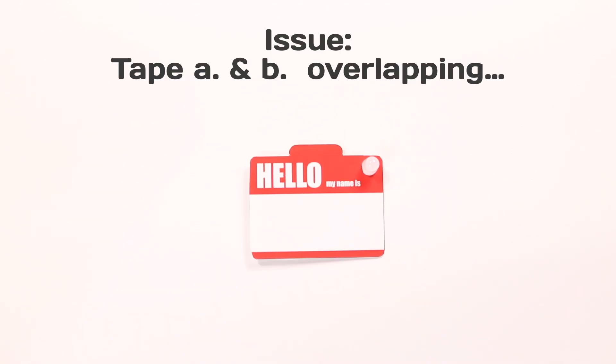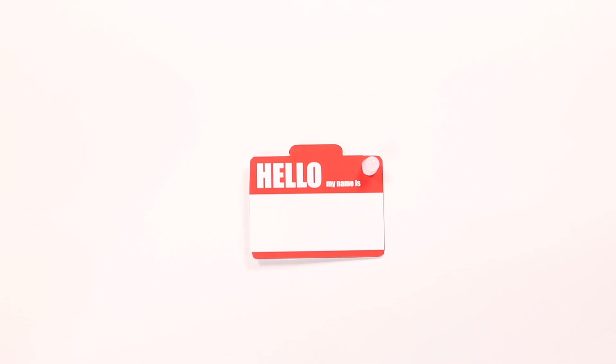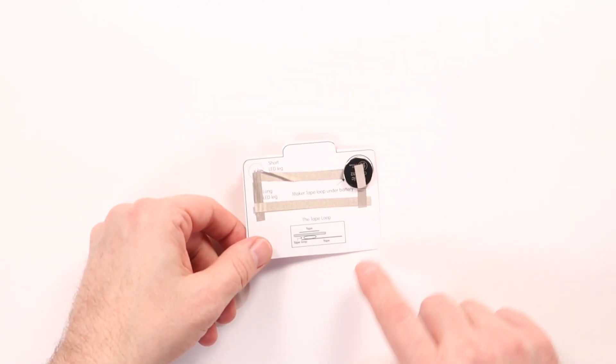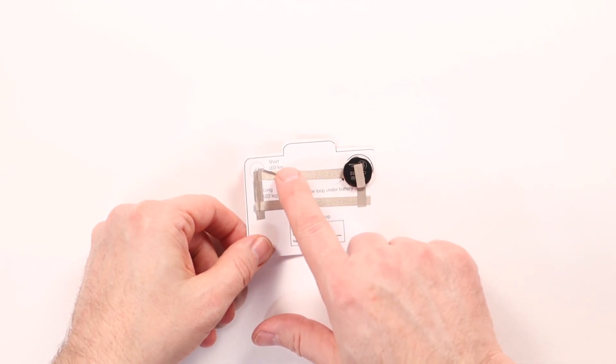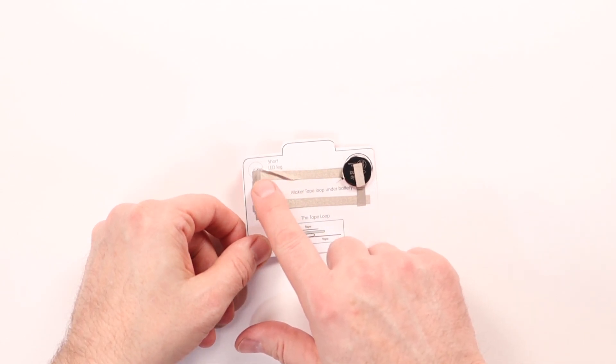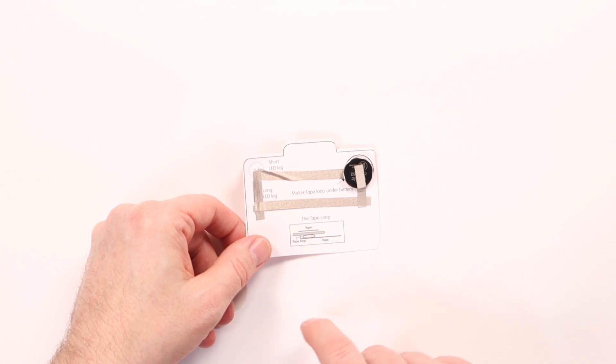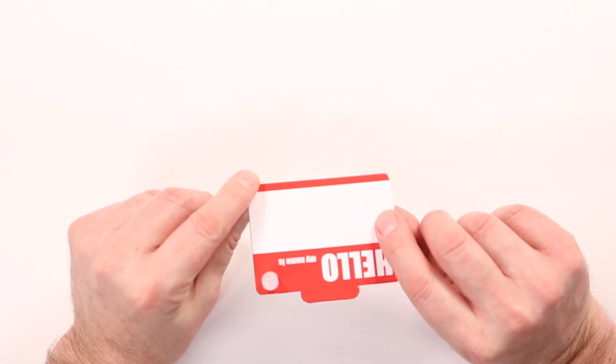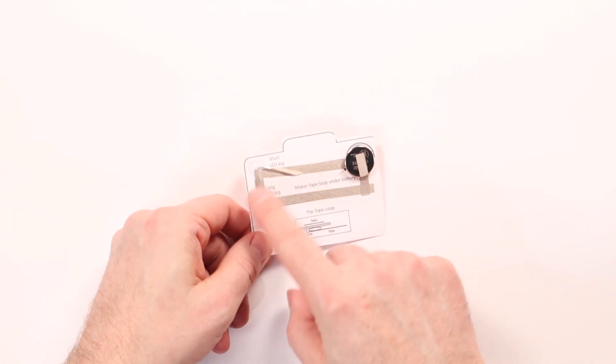Here's another badge that isn't lighting up. Let's flip it over and look at the circuit. For this one, we actually have a short circuit. The tape here and the tape here, A and B, are actually touching. They are overlapped. So there's no current running to the LED. It's shorting out through the tape. This is an easy fix as well.